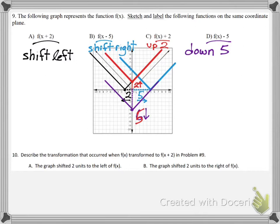And number 10: Describe the transformation that occurred when F of x transformed to F of x plus 2. Well, because the x plus 2 part is inside of the parentheses, that is a horizontal shift. And all horizontal shifts are reverse logic. So the graph went 2 units to the left.